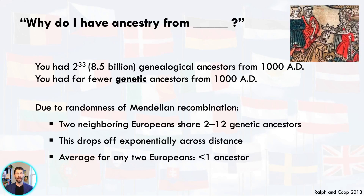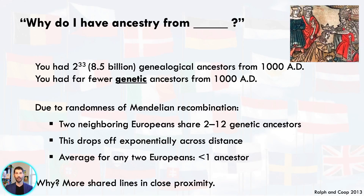This drops off exponentially with distance. On average, any two Europeans, regardless of what country they are in, have about one or a little bit less than one genetic ancestor in common. This is because they have more shared lines in close proximity. So if a Swedish person in Scandinavia has, let's say, 1,000 ties to an ancestor from 1,000 years ago who lived in Scandinavia, but only five or ten ties to an ancestor who lived in Spain — yes, it's possible they have some Spanish DNA, but it's much, much more likely that they have almost entirely Scandinavian DNA. So: more shared lines in close proximity.